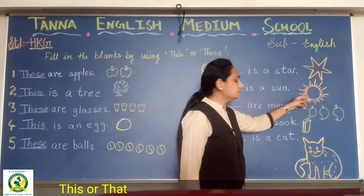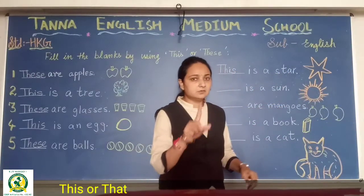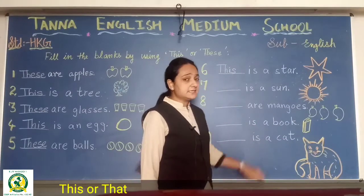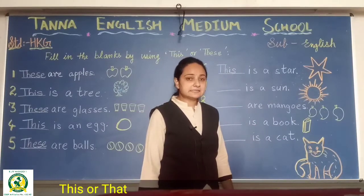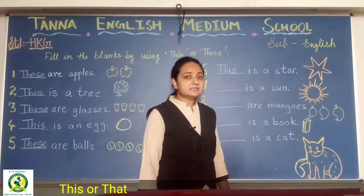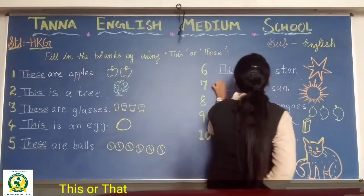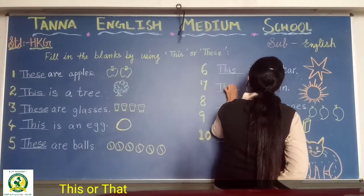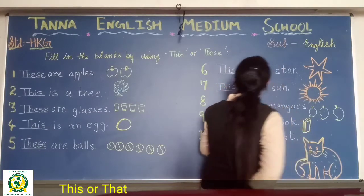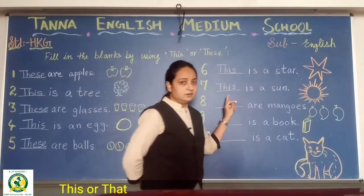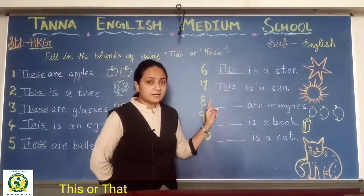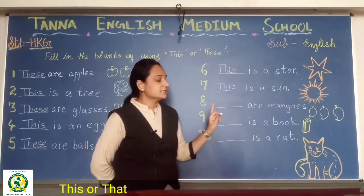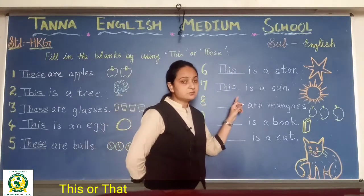Now see here, sun — only one sun. So what will you write here? 'This.' T-H-I-S. This is a sun. Are you writing with me? Very nice. You have to write with me.